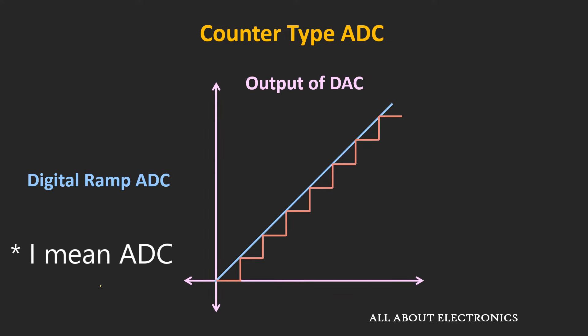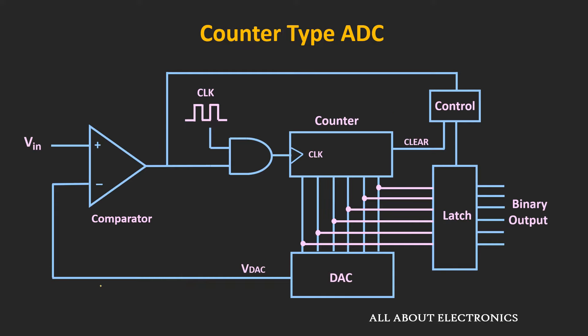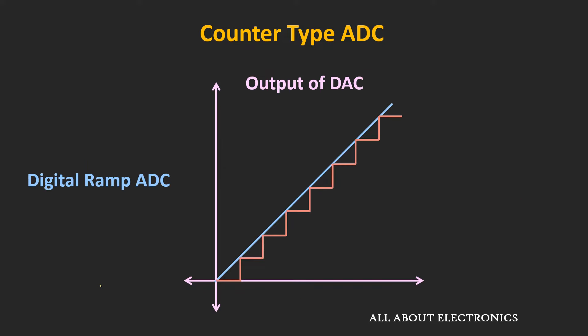This counter is also known as the digital ramp counter, because the output of the counter is given to the DAC. And as the counter increments its count, the output of the DAC increases in a ramp fashion. But actually, if you see the DAC output, it will look like a staircase.